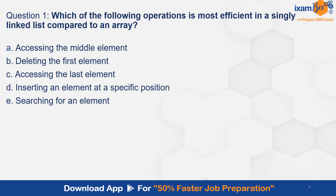Which of the following operations is most efficient in a singly linked list compared to an array? A. Accessing the middle element. B. Deleting the first element. C. Accessing the last element. D. Inserting an element at a specific position. E. Searching for an element. And the correct answer is B.